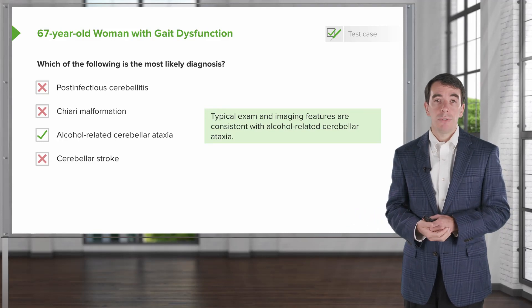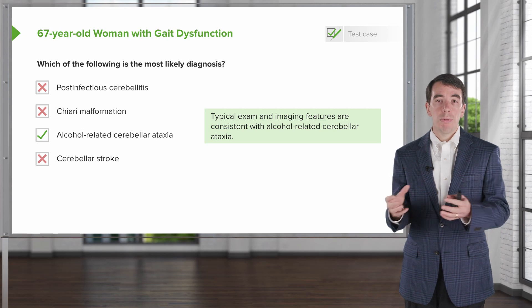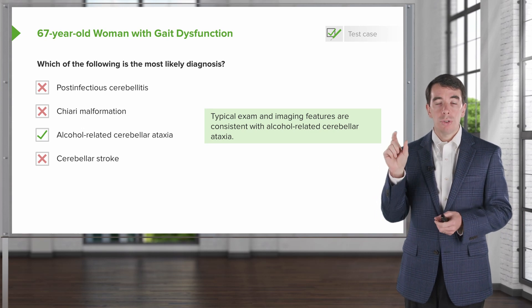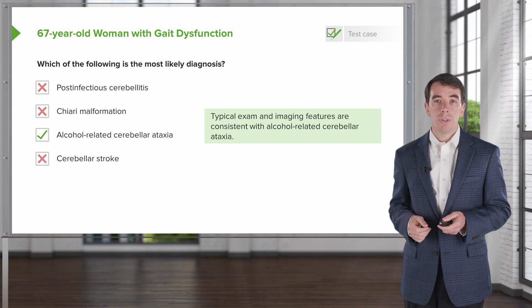This patient is suffering from alcohol-related cerebellar ataxia. The patient has an ataxic syndrome with a predilection for the superior vermis, which is very typical for alcohol-related cerebellar syndromes.